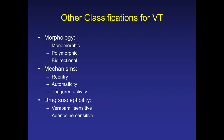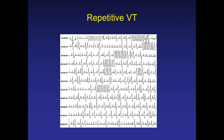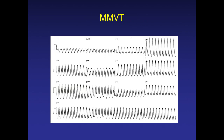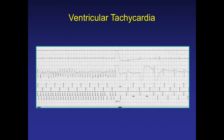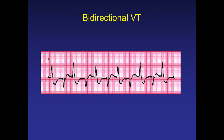Coming to management, VT can also be classified by drug sensitivity. Some types are adenosine sensitive. Others are verapamil sensitive — also called Belhassen-type tachycardia or repetitive VT. These are day-to-day examples of monomorphic non-idiopathic VTs. This was a device interrogation showing VT spells. In bidirectional VT, the axis keeps changing with each and every beat.